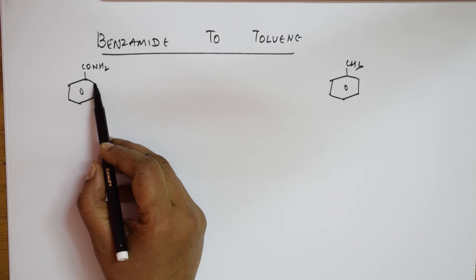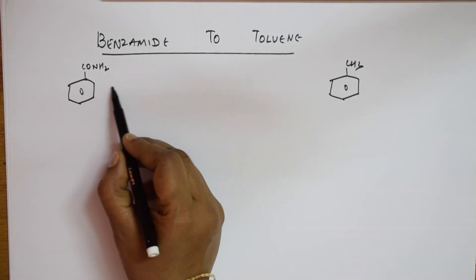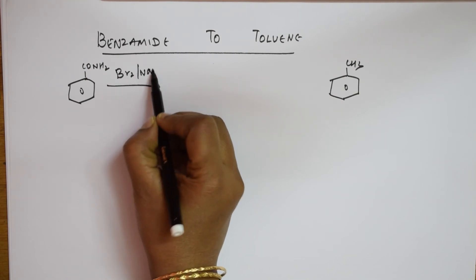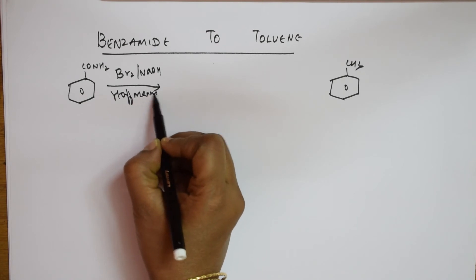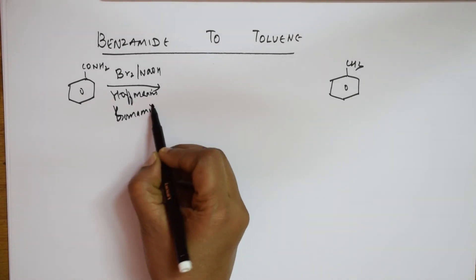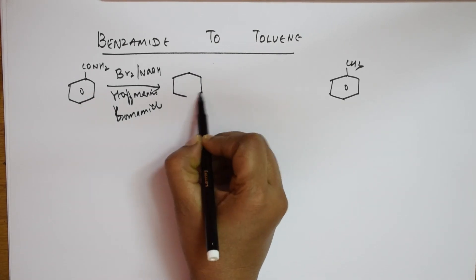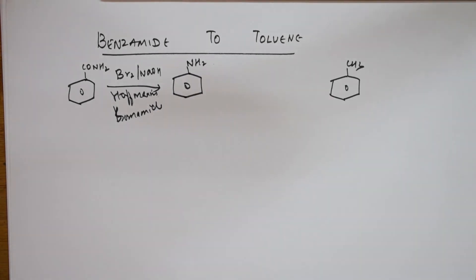First, as soon as you have benzamide, use Hoffman's bromide reaction - bromine in the presence of NaOH. When you do this, it will directly convert into aniline, forming an amine group.